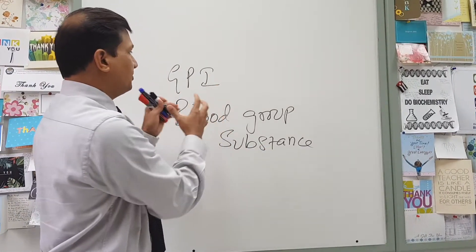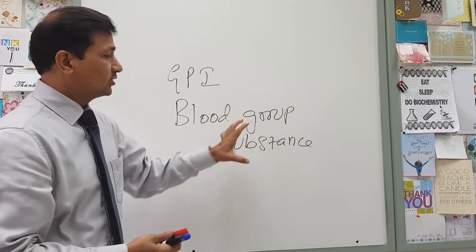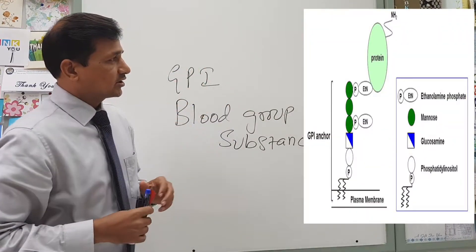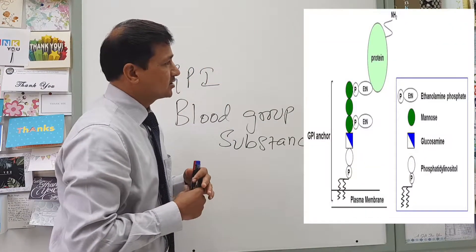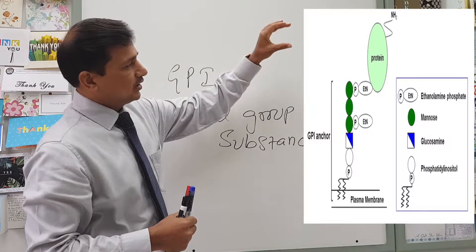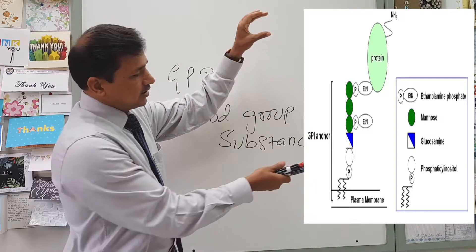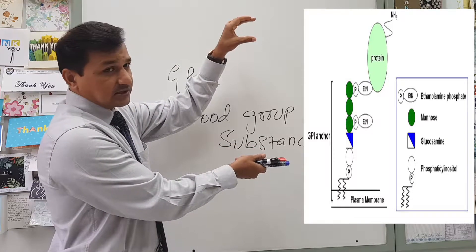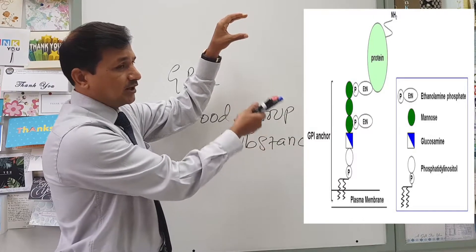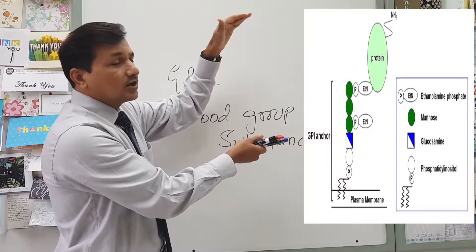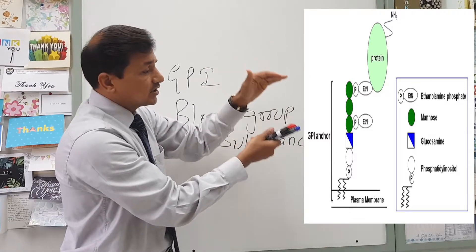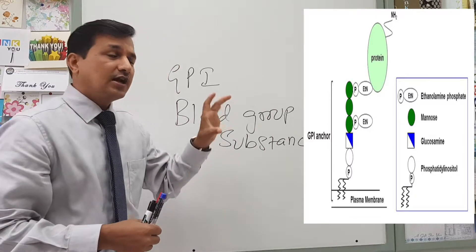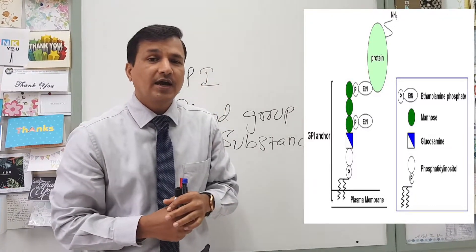First let us get into GPI, and then I will take you into blood group substances. Now, the GPI — glycophosphatidylinositol — I have shown you the structure here. As you can see, on top there is a protein molecule attached, and on the bottom there is a membrane. In between, there are a lot of different carbohydrate units attached, and that carbohydrate unit is attached to an additional fatty acid, which is attached to the membrane. That portion we call glycophosphatidylinositol.